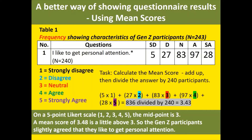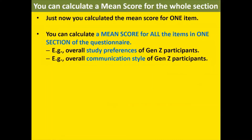The mean score is a very fast way to know the general pattern for a group. Questionnaire data are collected because we want to know the pattern for the group — we are not so interested in individual responses. In questionnaire results, we are not interested in the minority; we are interested in the majority patterns.